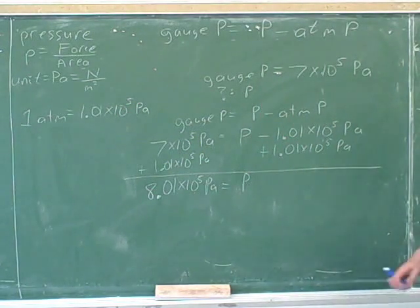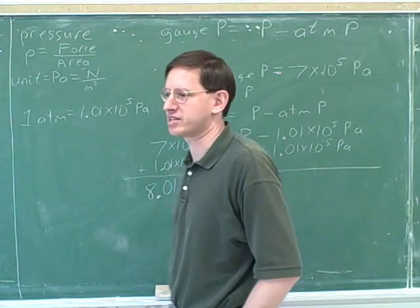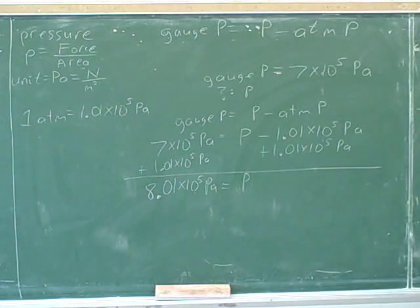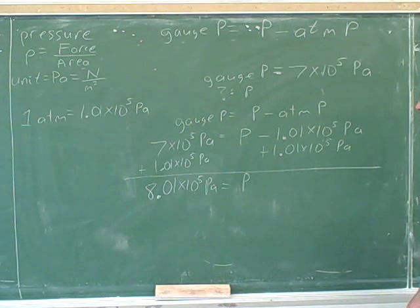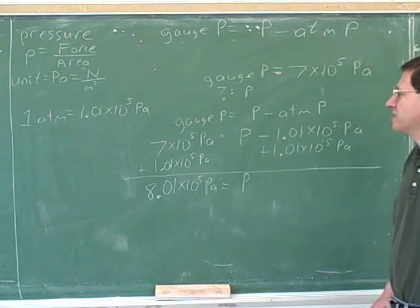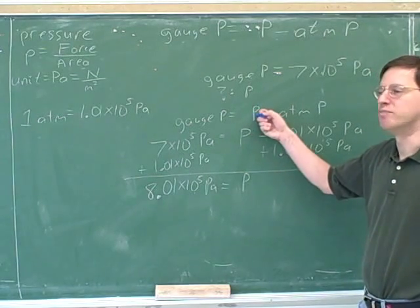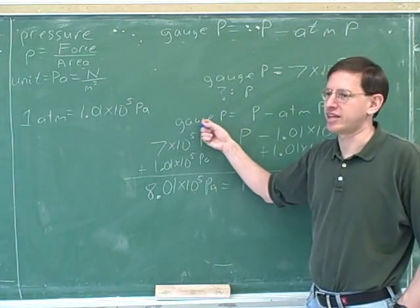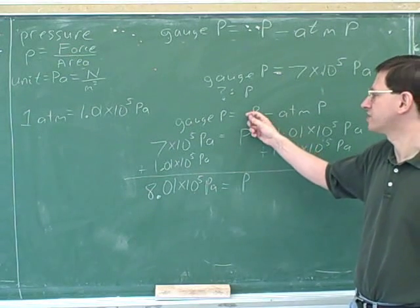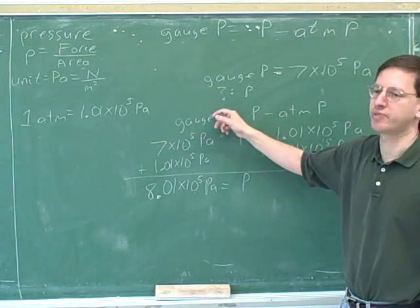It's important to be able to go back and forth between gauge pressure and actual pressure, just as it's important to go back and forth between atmospheres and Pascals, because some problems want gauge pressure and some want actual pressure. As far as symbols: P by itself means the actual absolute pressure — the total pressure. Gauge pressure is written out as 'gauge' and represents the extra pressure above atmospheric. Another name for actual pressure is absolute pressure.